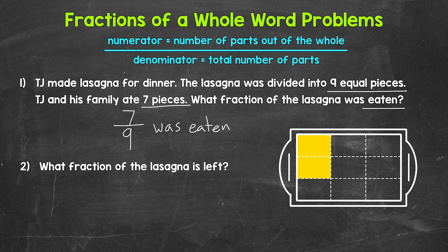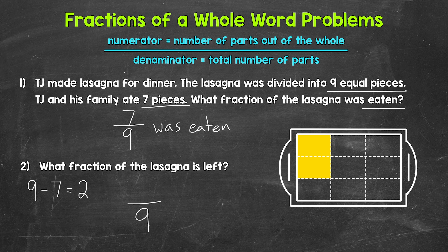Let's move on to number two: what fraction of the lasagna is left? If there were nine total pieces and seven were eaten, we figure this out by doing nine total pieces minus the seven pieces that were eaten, which gives us two pieces left. Now we need a fraction. The denominator is nine again, because that's the total number of pieces the lasagna was divided into. The numerator is two — the number of pieces left. Two is our numerator.